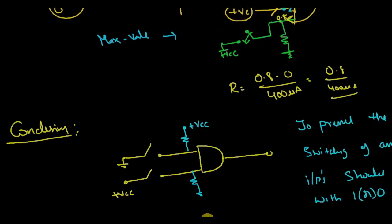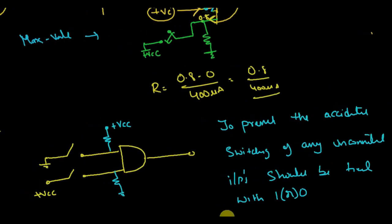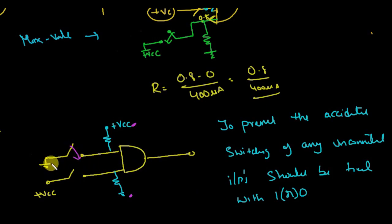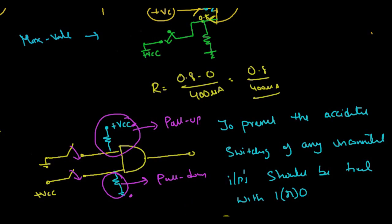In conclusion, to prevent accidental switching, any unconnected or floating input should be tied to logic 1 or logic 0 through a resistor. When the switch is closed I get 0, when open I get 1 — this is the pull-up resistor pulling the input high. When closed I get VCC, when open the input is pulled to ground — this is the pull-down resistor. Analyze your circuit to determine where to place each type.